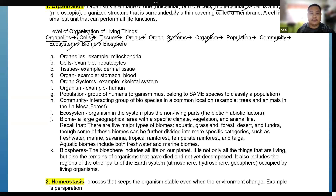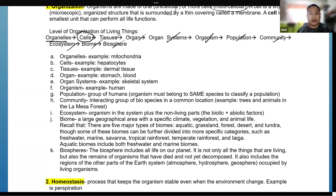Examples of organelles include mitochondria, ribosomes, and Golgi bodies. For cells, examples include liver cells (hepatocytes), dermatocytes, sperm cells, and egg cells. Tissues are groups of cells that perform a specific function — for example, dermal tissue or the lining of the stomach. An organ is a group of tissues; for example, the stomach, the heart, the blood, and the skin are all organs.